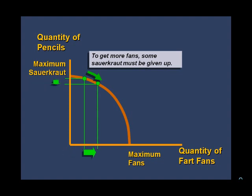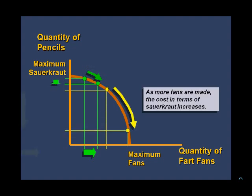When we start out making fans, we will use the land, labor, and tools best suited to the process. As we increase production of fans, we will need to use resources less well suited to fan production. Thus, the cost to produce each additional fan will increase. As an economy increases the production of one good, it will use progressively less productive resources, incurring diminishing returns. This means that as fan production rises, we will need to give up larger amounts of sauerkraut to make more fans.